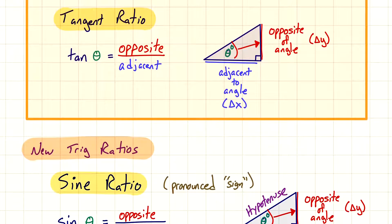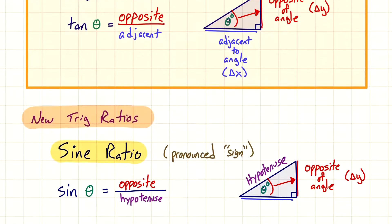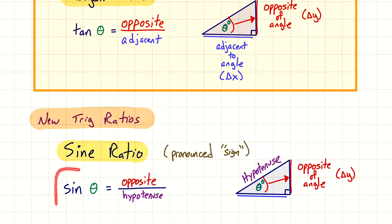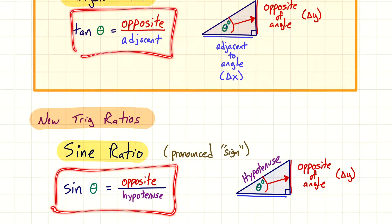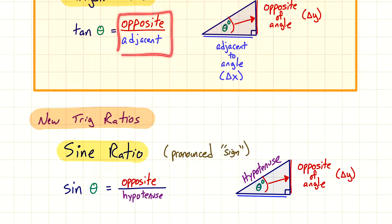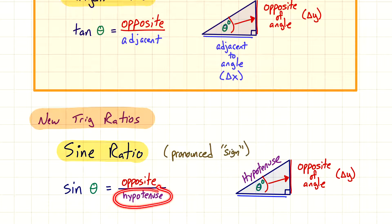The new trig ratios are going to be sine and cosine. The first one — pronounced 'sine' like a stop sign — looks very similar to the tangent ratio, almost set up the same way. The difference is we're using sine, so on our scientific calculators you'll notice a 'sin' button in addition to the 'tan' button. The ratios, even though they look similar, are not the same — they both have opposite on top, but sine has hypotenuse on the bottom.